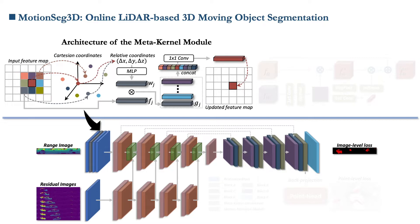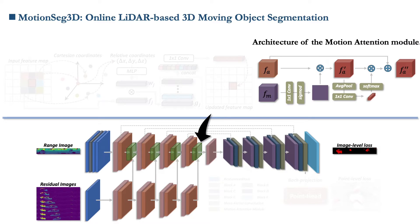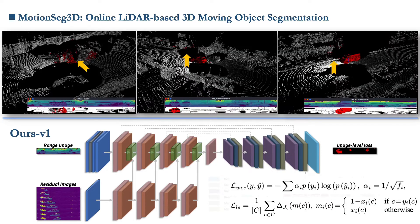To better utilize motion information to guide appearance features, the information from the two branches is fused at different scales using spatial attention and channel attention. To preserve descriptive features, we replace average pooling in the backbone with soft pooling, which retains more information in the reduced activation maps. The total loss function combines both weighted cross-entropy and Lovász-softmax losses.